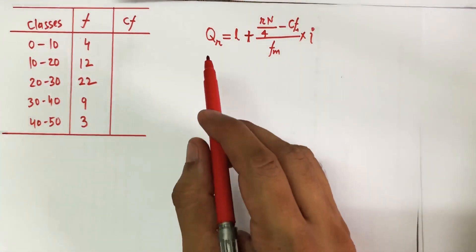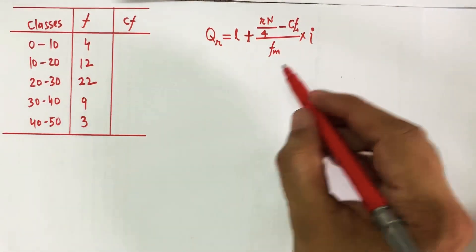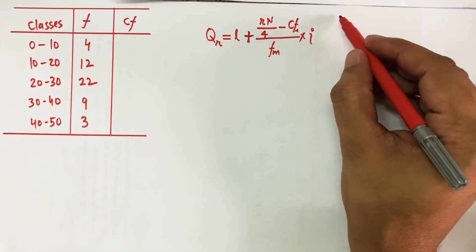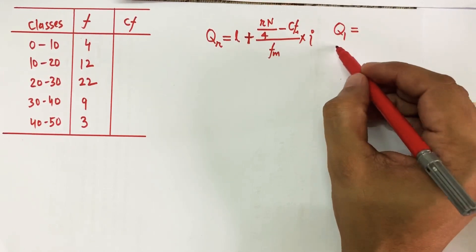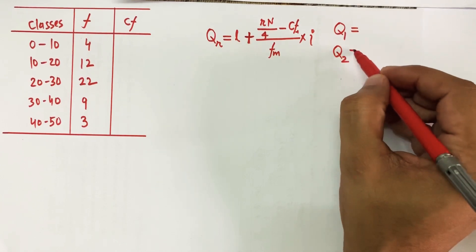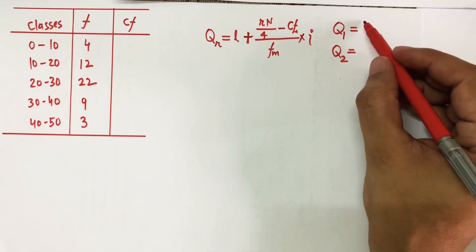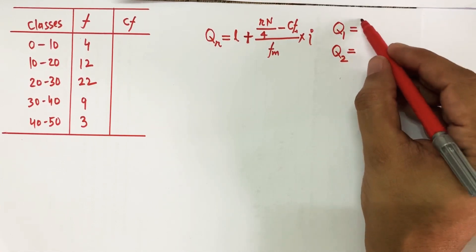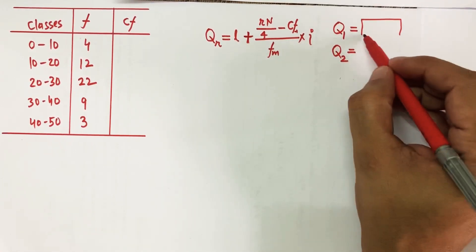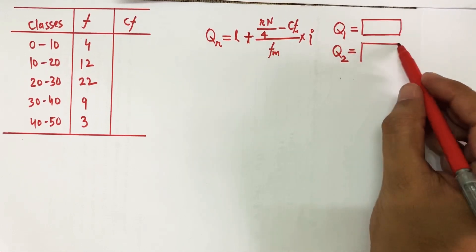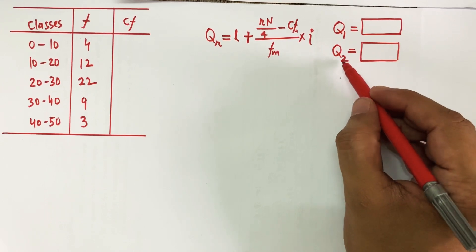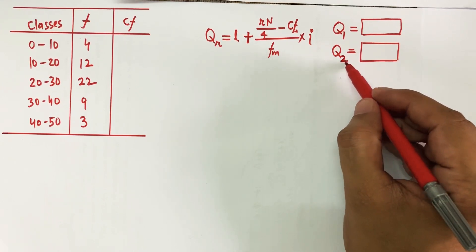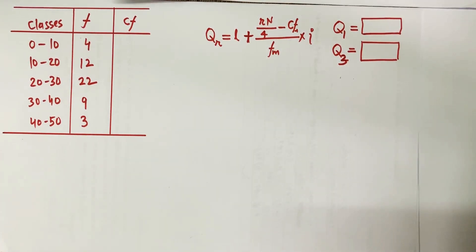My objective is to calculate the quartile. I will be calculating two points: the first quartile Q1 and — since the second quartile Q2 is always equal to the median — instead of Q2, let's calculate Q3, the third quartile. So these are the two calculations I am trying to make here.